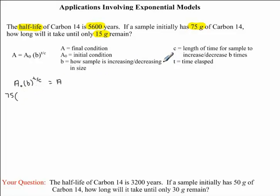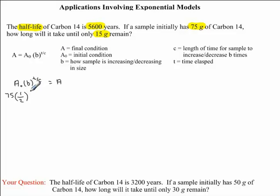B represents how the sample is increasing or decreasing in size. We're told we're dealing with half-life, so carbon-14 will be decreasing — it will be half its size after 5,600 years. So we substitute one-half in for variable B. T is our time elapsed, which is what we're solving for, so I'm going to leave this as T — this is our unknown. C is the length of time for the sample to decrease B times, which is 5,600 years, so C equals 5,600.